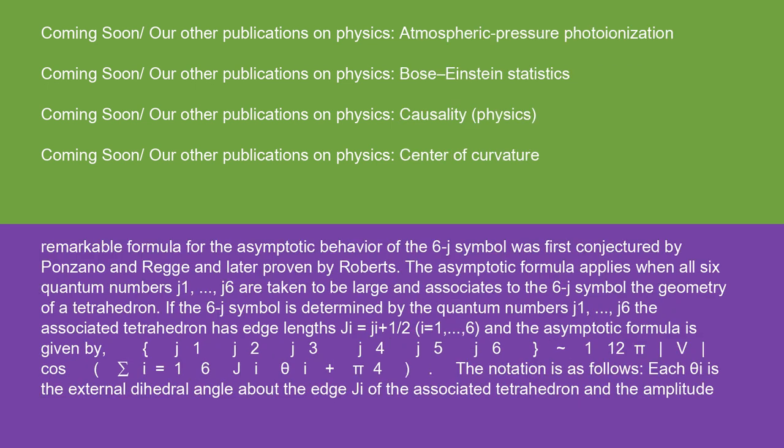Asymptotics: A remarkable formula for the asymptotic behavior of the 6J symbol was first conjectured by Ponzano and Regge and later proven by Roberts. The asymptotic formula applies when all six quantum numbers J1 to J6 are taken to be large and associates to the 6J symbol the geometry of a tetrahedron. If the 6J symbol is determined by the quantum numbers J1 to J6, the associated tetrahedron has edge lengths ℓI equal to JI plus 1/2, I equals 1 to 6. And the asymptotic formula is given by J1, J2, J3, J4, J5, J6 approximately equals 1 over 12πV times cosine of sigma I equals 1 to 6 of JI θI plus π/4.